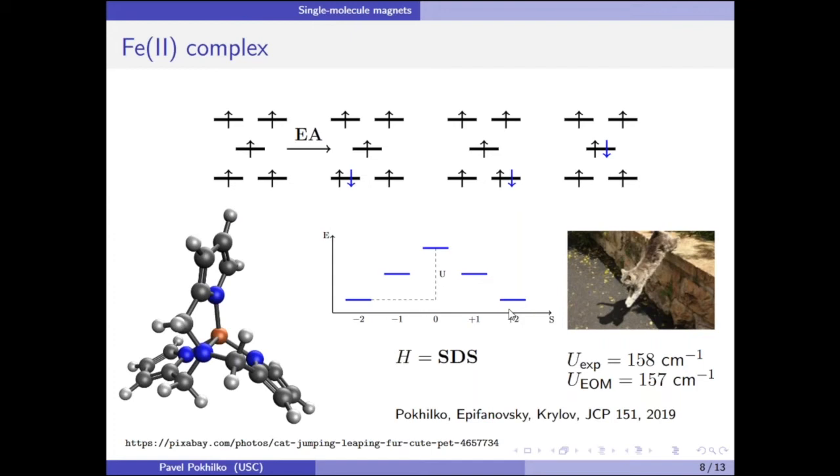This situation can be described by an effective Hamiltonian of this type S·D·S, where D is a tensor called single ion anisotropy. Its name perfectly fits the situation that we have here—we have only one transition atom. If we compare our calculations with experimental results, we see very good agreement. From that we can think we're on a good track in computing these properties.